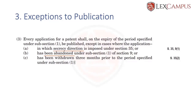The second instance is where the application has been abandoned under Section 9(1). If you file a provisional specification and don't follow it up with a complete specification, it is treated as abandoned. Provisionals that are abandoned are not published; provisionals followed by a complete specification are published. When the complete specification is available, the provisional is also accessible. So when a provisional is abandoned under 9(1), it is not published.